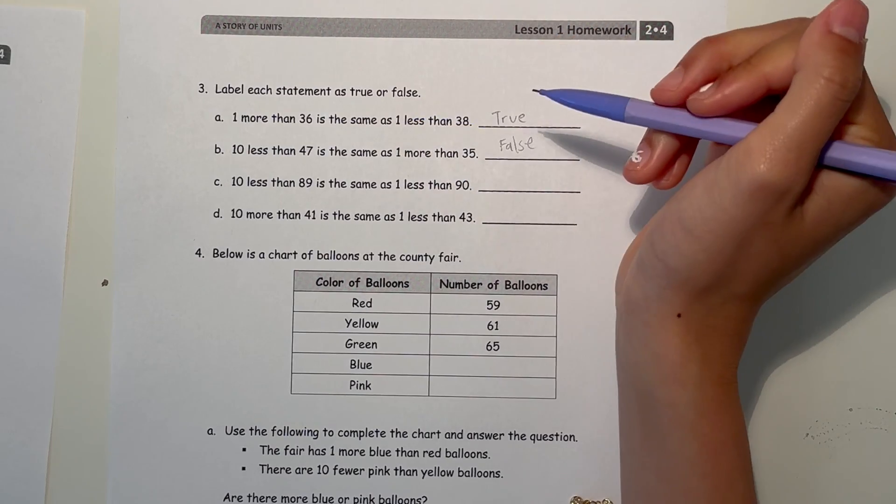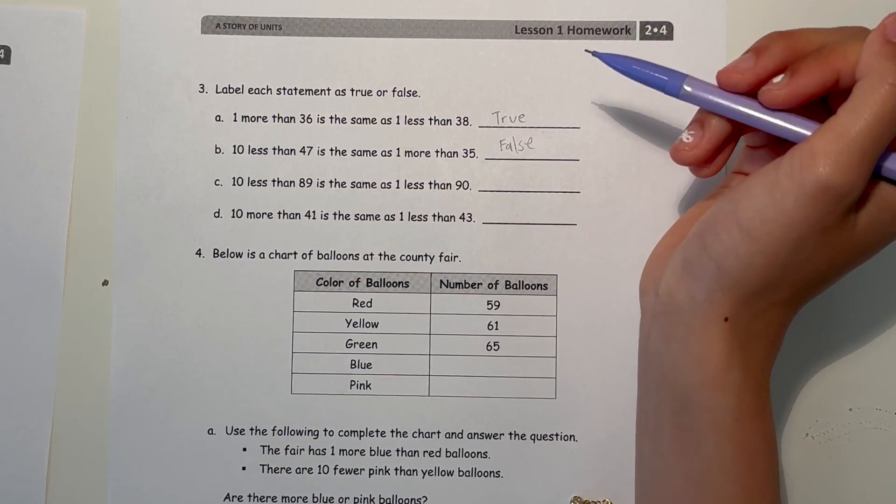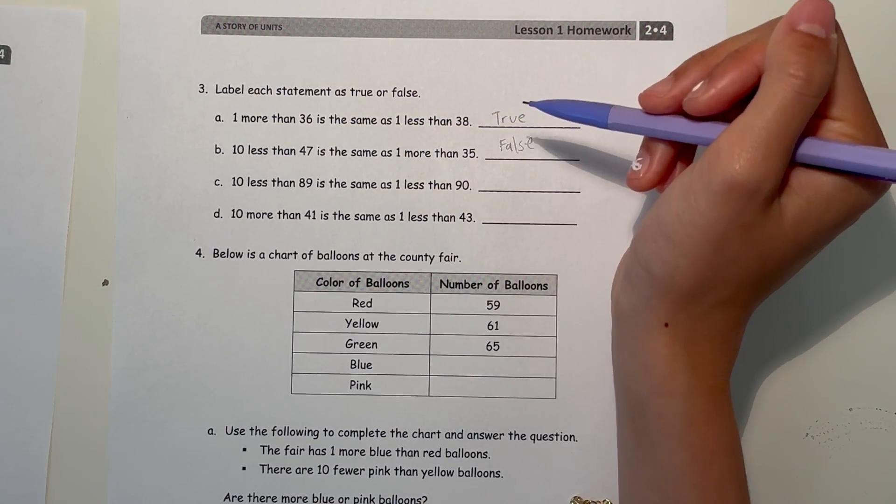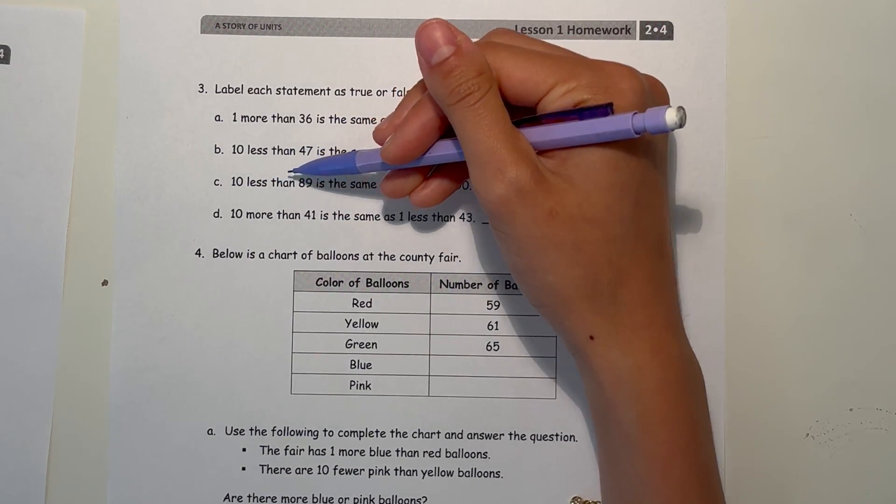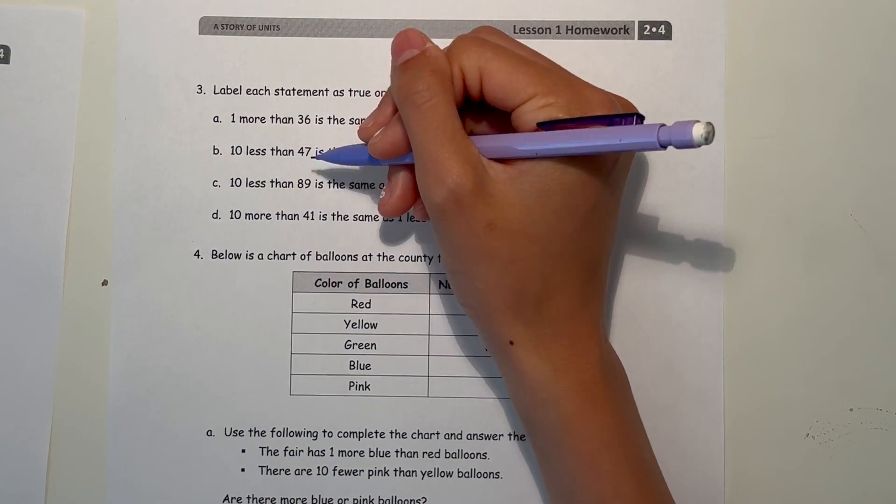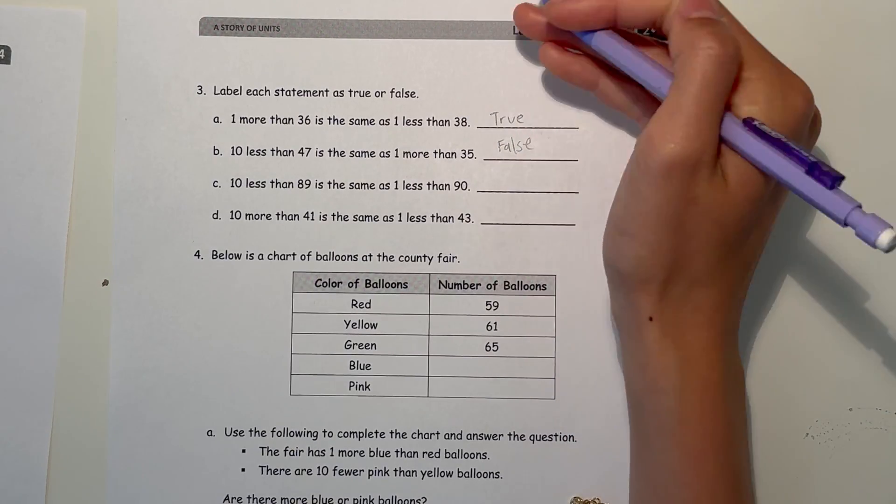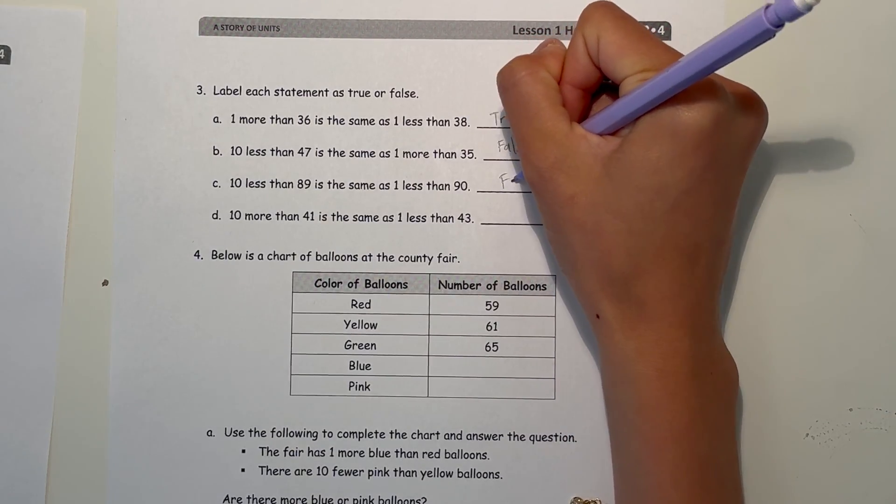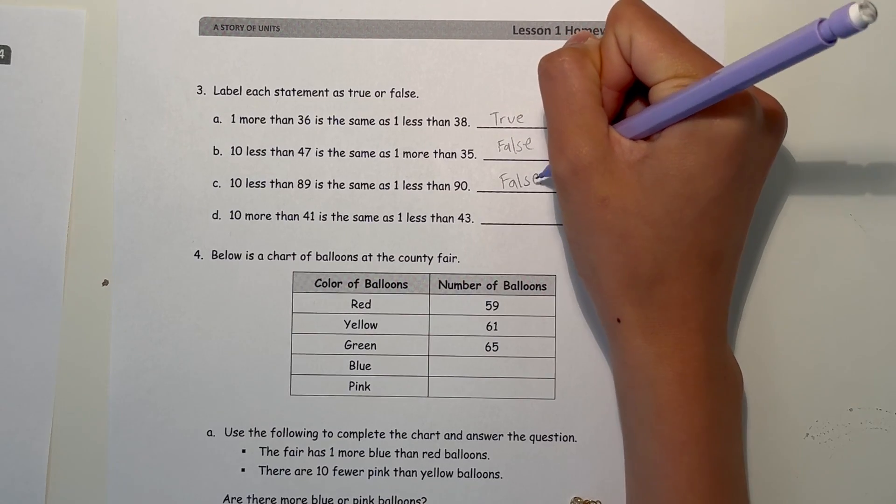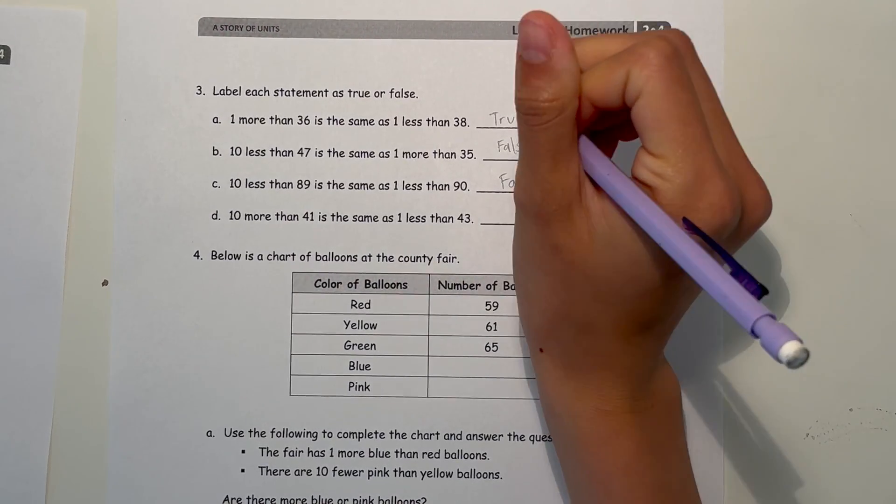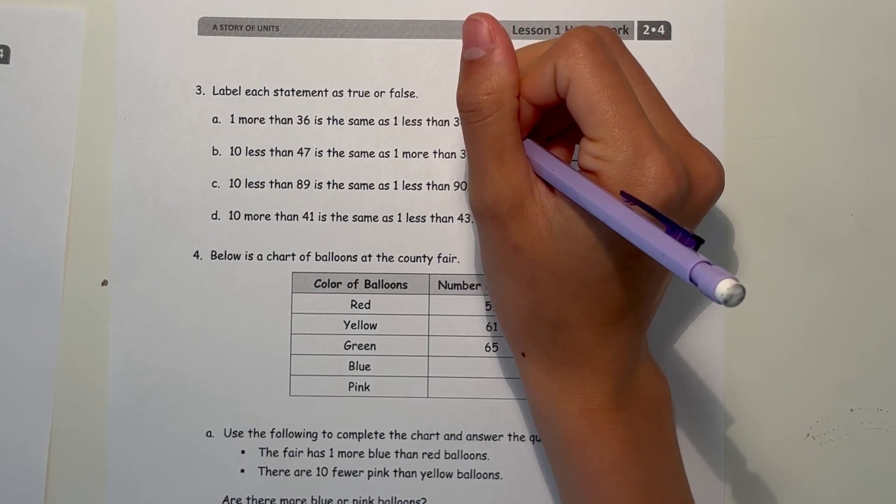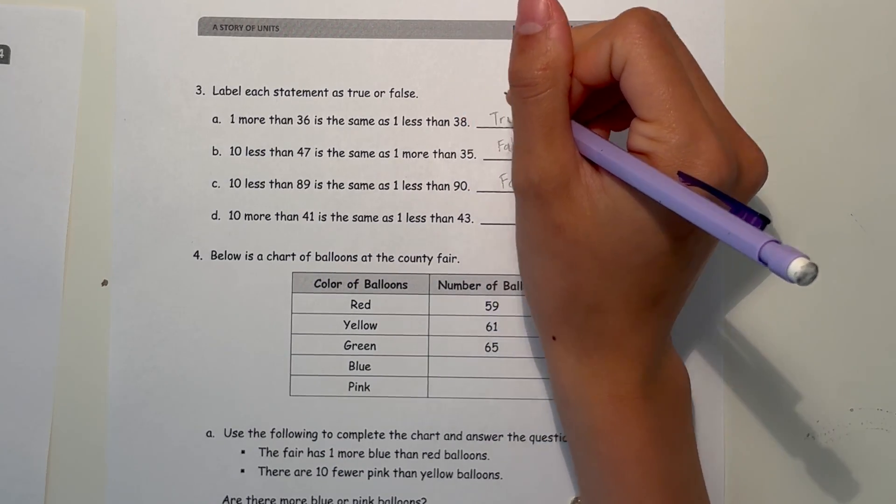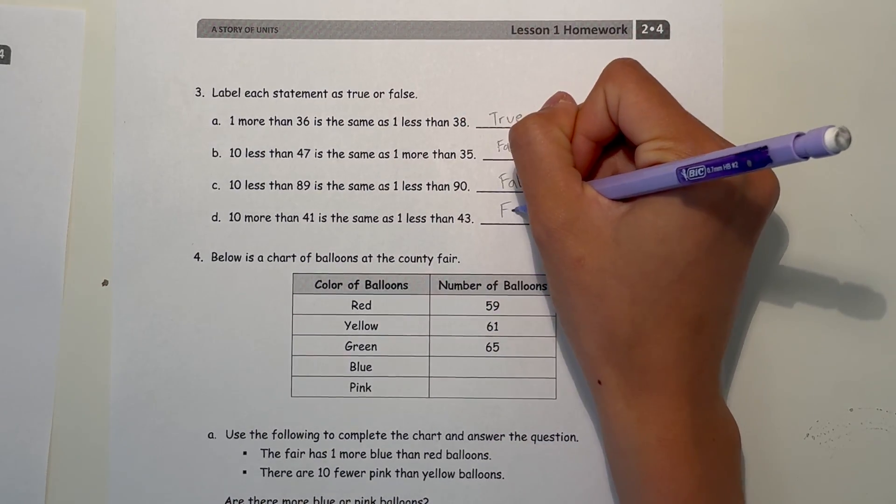And C. 10 less than 89 is the same as 1 less than 90. 10 less than 89 is 79. And 1 less than 90 is 89. So this is false. And D. 10 more than 41, which is 51, is the same as 1 less than 43, which is 42. So this is also false.